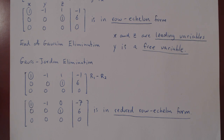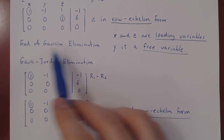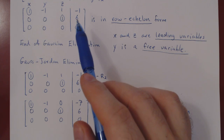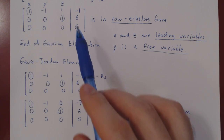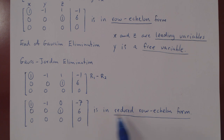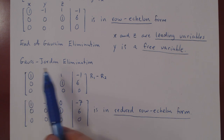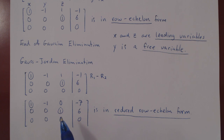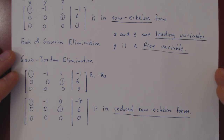Why do we do this rather than use backward substitution? At this point you could use backward substitution, but you would have to perform extra algebra and it would not be fully simplified. Once you have reached the reduced row echelon form through Gauss-Jordan elimination, you can write the solution set immediately with no further algebra required.